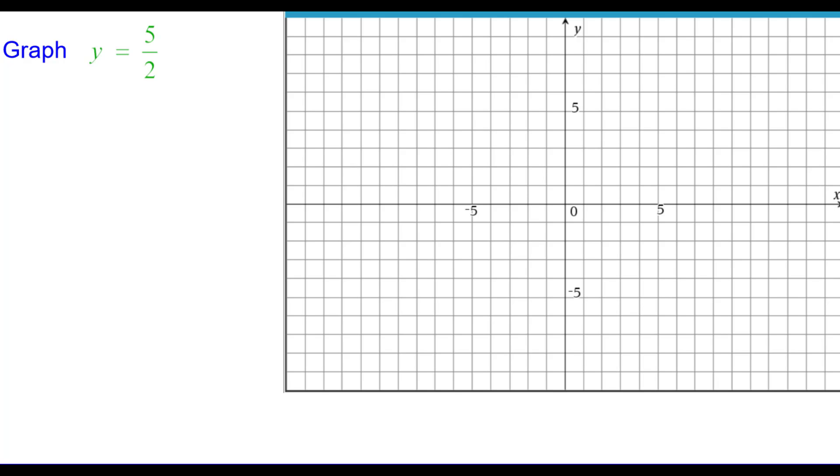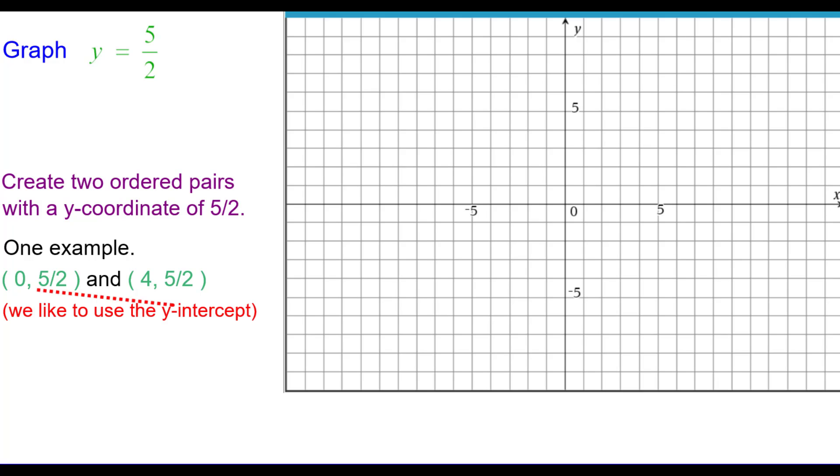Let's graph y equals 5 halves. Here the constant is 5 halves, or 2 and a half. We need to create two ordered pairs with a y-coordinate of 5 halves. One example would be (0, 5/2) and (4, 5/2). We like to use the y-intercept when possible.